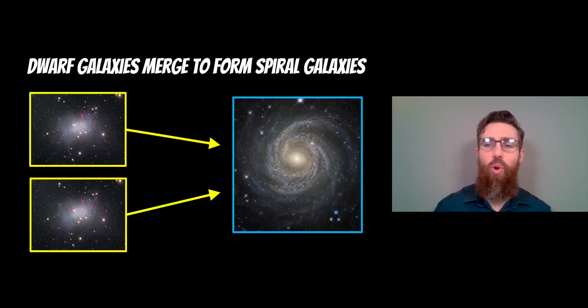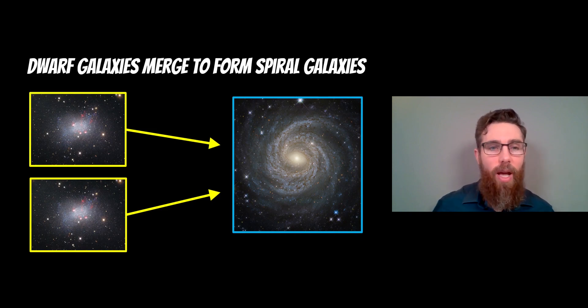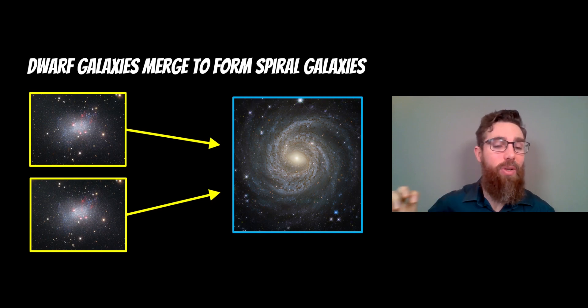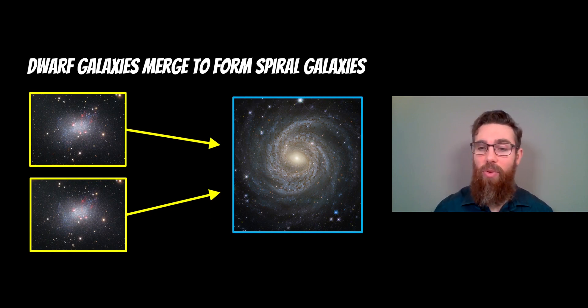When you've got these dwarf galaxies you'll have quite a lot of them and they will begin to merge. They will collide with each other and start to grow in size. The resultant galaxy from the merger of a few dwarf galaxies will start to form a spiral galaxy.